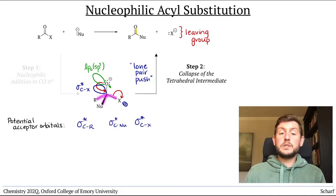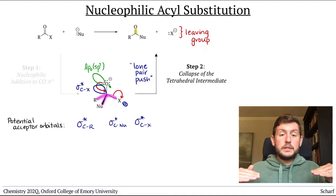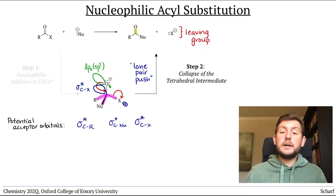The energy of the sigma star orbital, the lower the better, and the stability of the leaving group. Usually we focus on the latter, so let's go with that method for the moment.